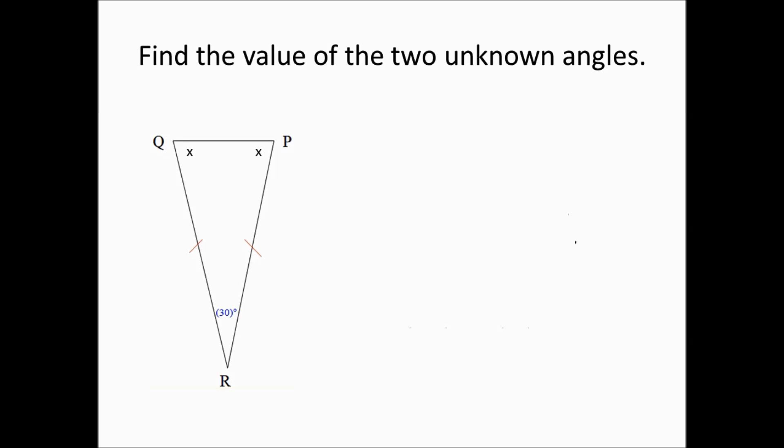Due to the triangle sum theorem, we know that the sum of the angle measurements of a triangle equals 180. So we set 180 equal to 30, which is one of the known angle measurements, plus X plus the other X. The rest becomes algebra.